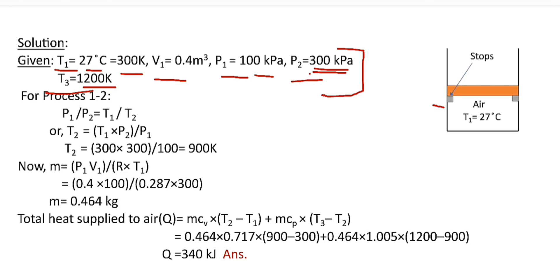Heat addition till the pressure of 300 kPa is done at constant volume. So for process 1 to 2, P1 divided by P2 is equal to T1 divided by T2, and this relation is derived from PV equals mRT, the ideal gas equation.